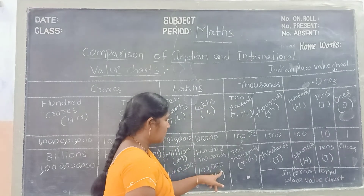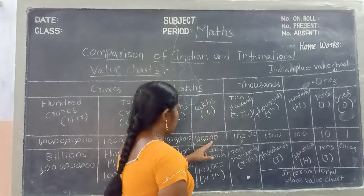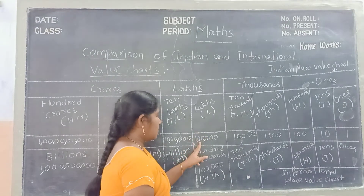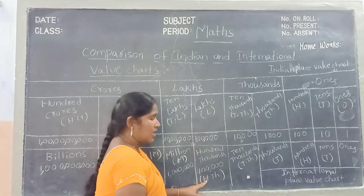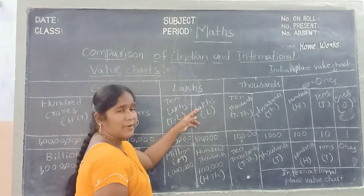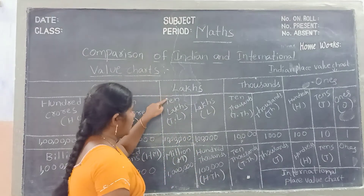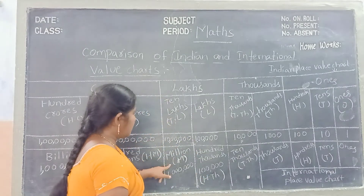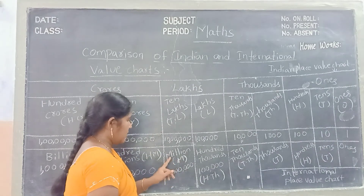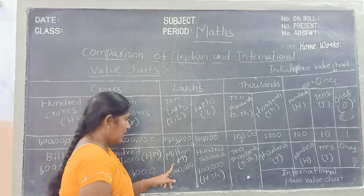See children, how I am keeping commas — every three digits. In the Indian place value chart, we keep commas after three digits first, then every two digits after that. In the international place value chart, we keep commas every three digits, children. In the Indian place value chart, ten lakhs; in the international place value chart, that one is millions, short form M.